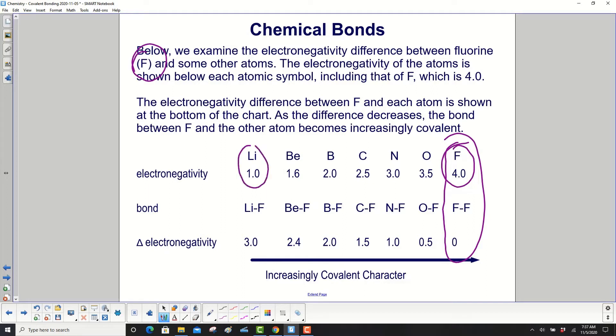The electronegativity difference between fluorine and each atom is shown at the bottom of the chart. As the difference decreases, and it's going this way, you can see it's going from 3 to 2.4 to 2, etc. As that decreases,